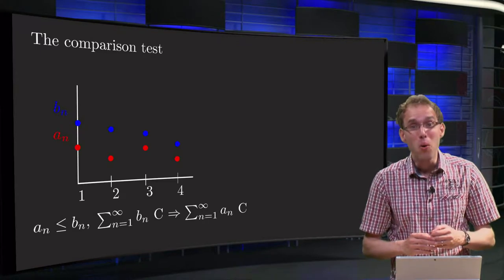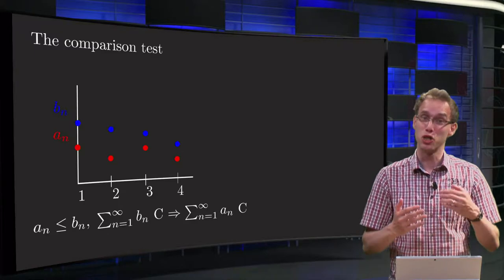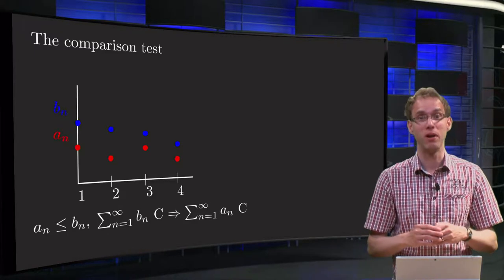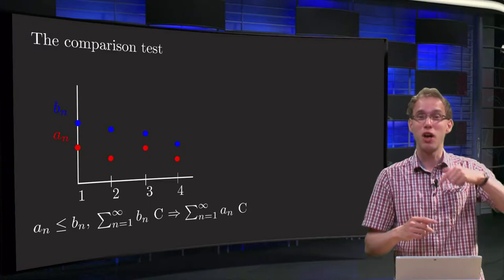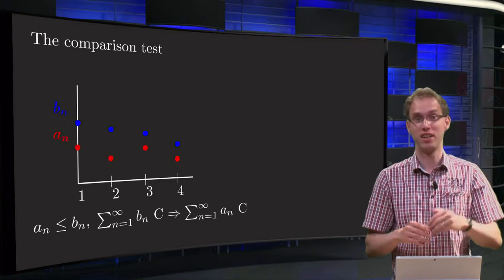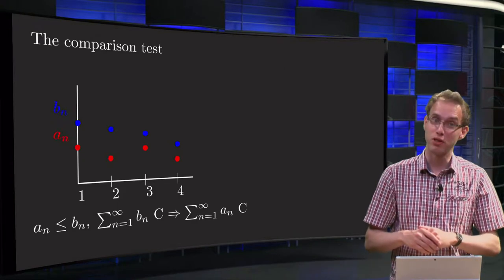A series below a convergent series is smaller than a convergent series, so it converges as well. A series which is above a divergent series is even larger than a divergent series, and diverges as well.